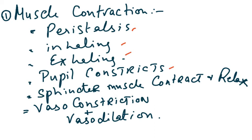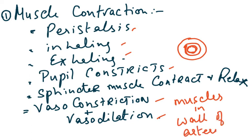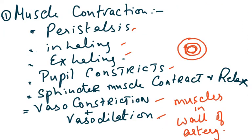Further examples of muscle contraction include: sphincter muscles contracting and relaxing (e.g. the anal sphincter), and vasoconstriction and vasodilation — which involve muscles in the walls of arteries contracting or relaxing. In MCQs, you must correlate these specific examples back to muscle contraction, otherwise you will miss the question.